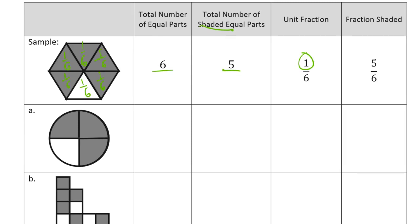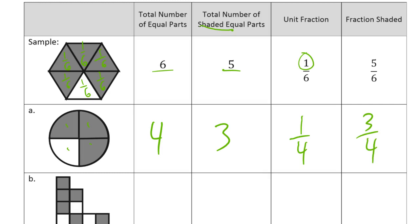Now this circle has one, two, three — four equal parts. Three of them are shaded. The unit fraction is one-fourth, and there are three-fourths shaded in.